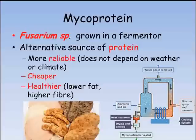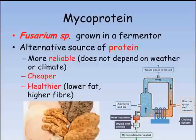Mycoprotein has several advantages over using animals as a protein source. Firstly, it can be produced much faster than animal protein. Using a fermenter also takes up less space than either animals or plant crops, and is more reliable as it doesn't depend on certain weather conditions. For this reason, mycoprotein can be produced anywhere in the world. It's cheaper, as the nutrition for the fungus comes from the waste products of other processes. Finally, mycoprotein is healthier than most animal and plant sources of protein as it contains more fiber and less fat than meat.